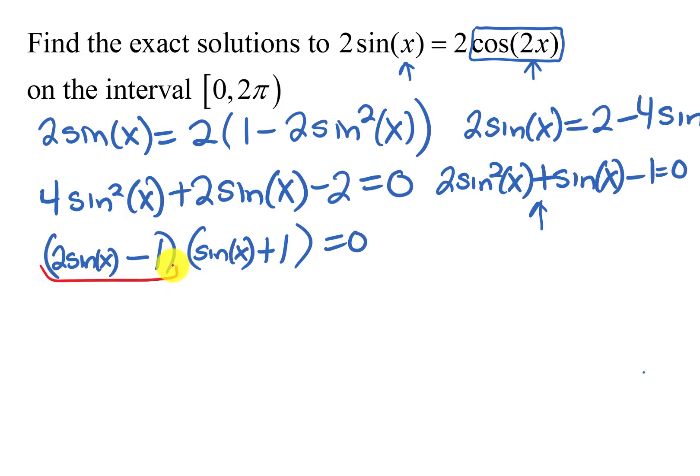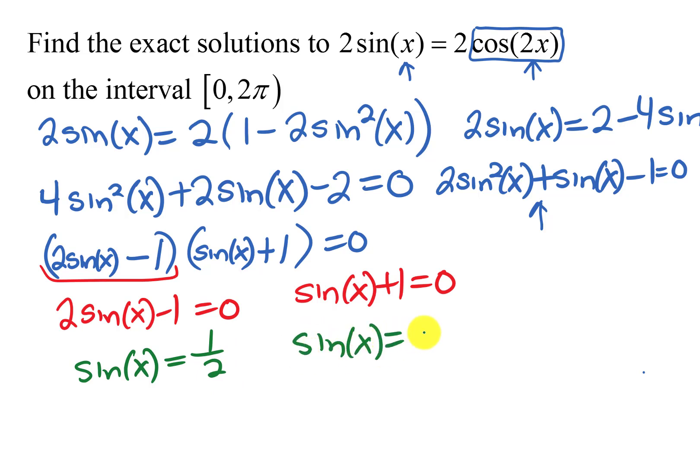So we have 2 sine x minus 1 equals 0 or we have sine x plus 1 equals 0. So for both of those I'm going to isolate the sine x. So this first one I'll have sine x equals 1 over 2 and the second one I'll have sine x equaling negative 1.